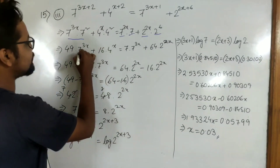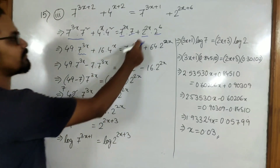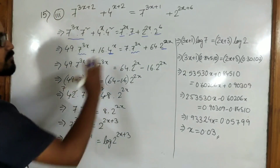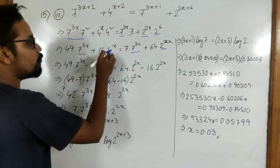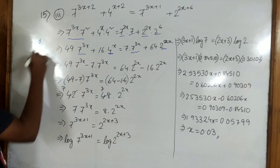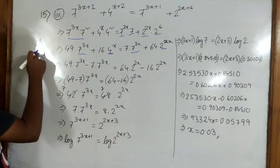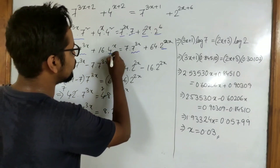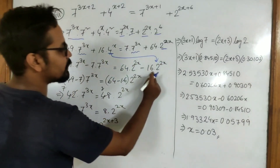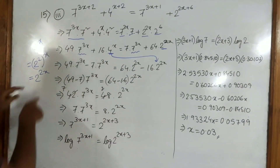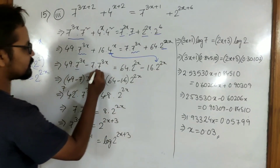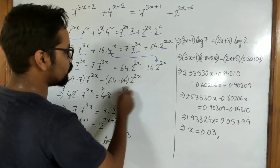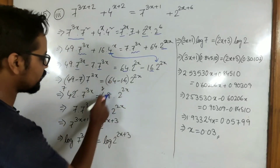Next, we bring these terms to the same side. 7 to the power 3x we bring to the LHS, and 4 to the power x and 2 to the power 2x we bring to the same side. Now 4 to the power x means 2 squared whole to the power x because 4 is 2 squared — so we can write 2 to the power 2x. We take 7 to the power 3x as common; 49 minus 7 gives 42. We take 2 to the power 2x as common; 64 minus 16 gives 48.